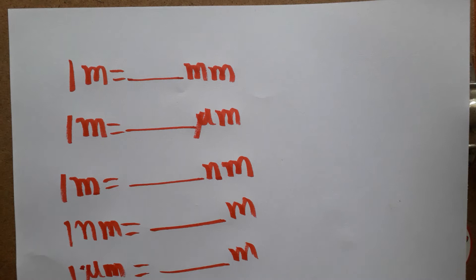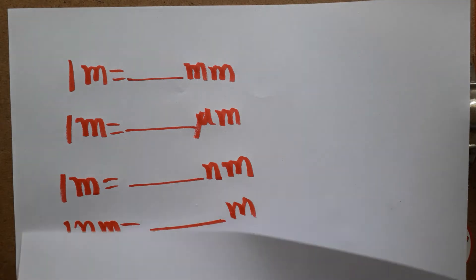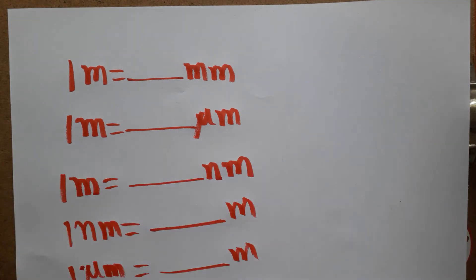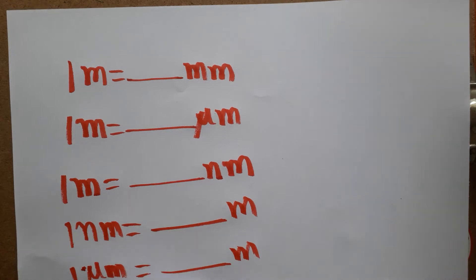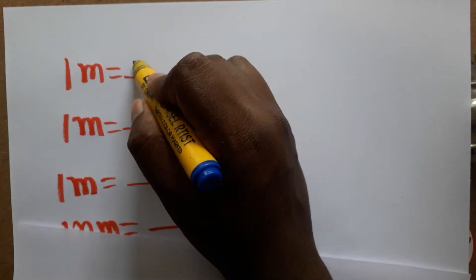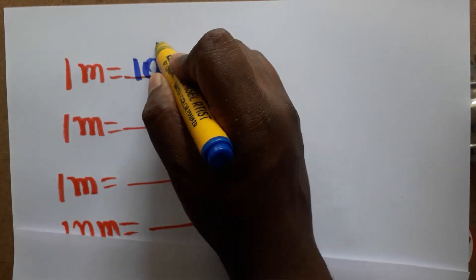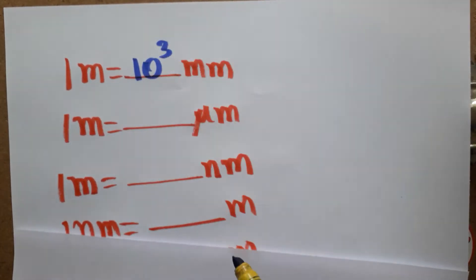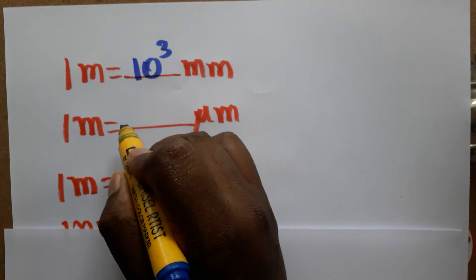First we will learn meter to millimeter. The power relation is 10 to the power 3, so 1 meter is equal to 1000 millimeters, that is 10 power 3 millimeters.